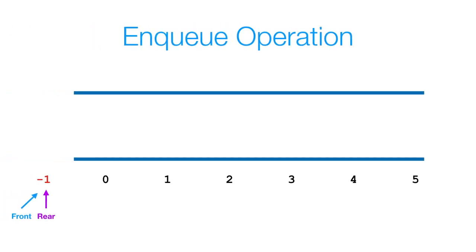Let's move on to the enqueue operation. To enqueue an element is the same thing as adding an element to the rear of my queue. Unlike a stack where I add to the top and remove from the top and only need to keep track of one variable, in a queue I add to the rear and remove from the front, so I need to keep track of those two things.